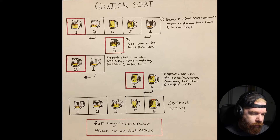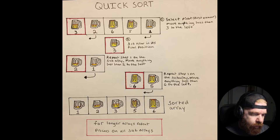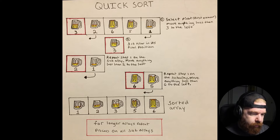We move down to the next subarray — the left part with 2 and 1. Starting with 2, anything smaller gets moved to the left, so 1 goes here. Then we move on to the right side, which is 6 and 5. Anything smaller than 6 moves to the left. When we're done, we have 1, 2, 3, 5, 6. If the array were longer, we'd just repeat this entire process. Hopefully that's clear — let's move on to the code.